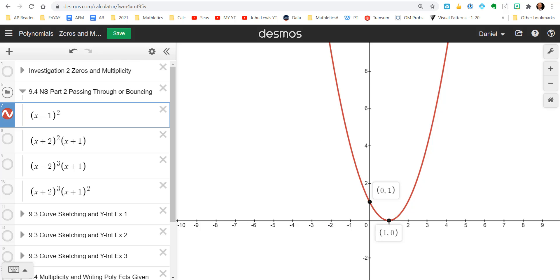So in Desmos, here we go. So x minus one squared. There we go. So we've got our x-intercept right here at (1, 0). We have a y-intercept at (0, 1). That's kind of cool. I like how Desmos does that. All right.